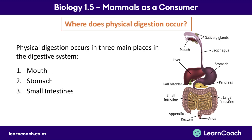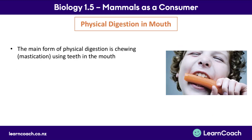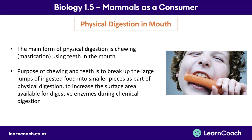So where does physical digestion occur? The majority of physical digestion occurs in the mouth with the act of chewing, also called mastication. It makes sense that the first place physical digestion occurs is in the mouth, straight after we've ingested the food. Chewing and having teeth helps to break up large lumps of food into smaller parts so we can swallow them and they can end up in the stomach.